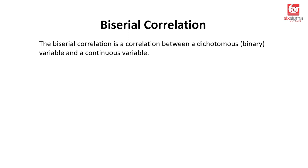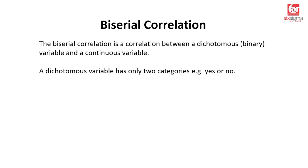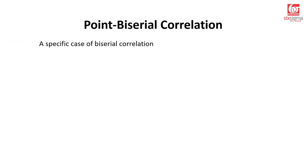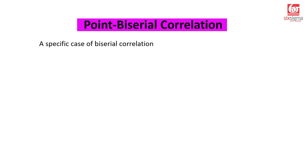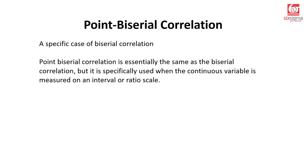Let's understand this a little closely. We have one variable which is binary in nature — a dichotomous variable, could be a yes or no — and the other variable is continuous in nature. We'll be talking about a specific case of bi-serial correlations known as the point bi-serial correlation. A point bi-serial correlation is essentially the same as the bi-serial correlation, but it is specifically used when the continuous variable is measured on an interval or ratio scale. So the difference between bi-serial and point bi-serial is that in bi-serial the numerical variable could be any scale, whereas in point bi-serial it must strictly be interval or ratio scale.